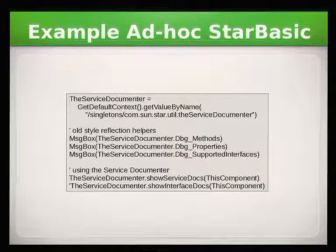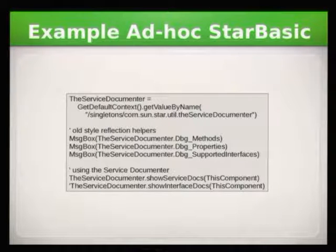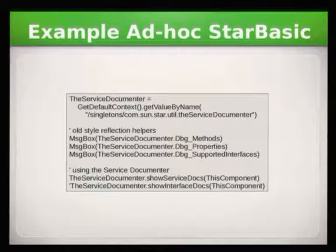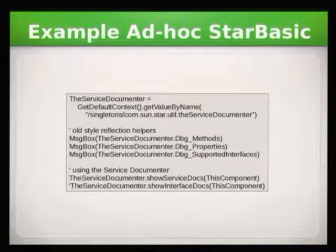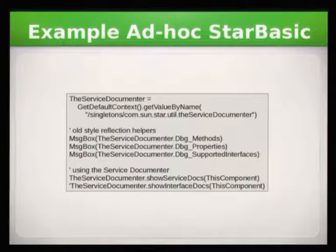It's easy if you have this component, because you roughly know you have a Writer document at this point. But if you're like 20 levels deep — you get a paragraph, then take a text selection, and from that you took something again — you might not be sure what exactly you're holding there. With this, you can just ad hoc, at runtime, find out what that thing can do and what it actually is. You can do the same with showInterfaceDocs, but if you do that with a Writer document, you'll have like 20 tabs open because there are so many interfaces.